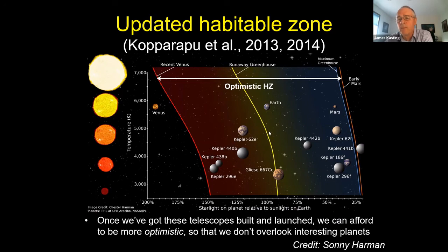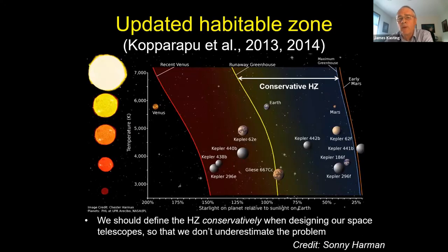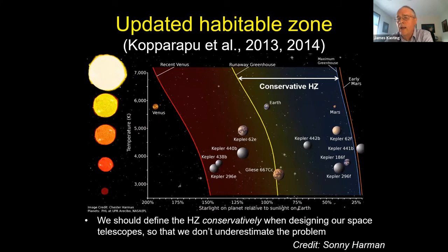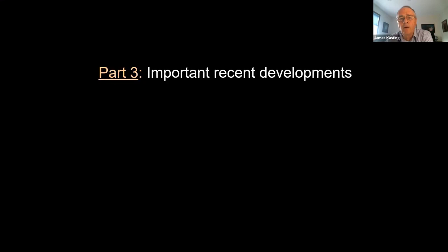When designing big space telescopes, you want to use the conservative habitable zone. Fortunately, people have been doing that using the big space telescopes they have been designing.